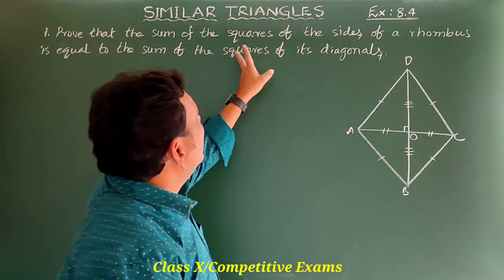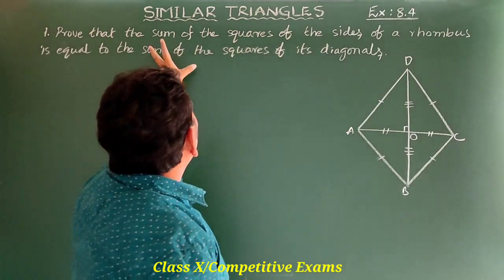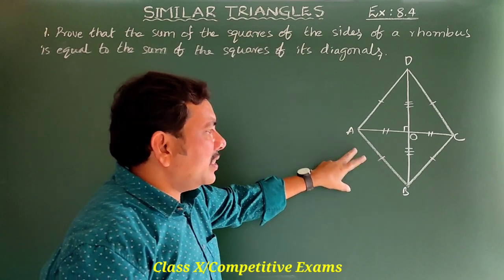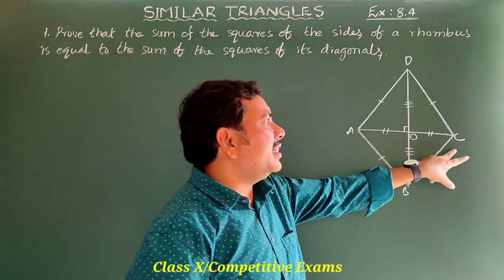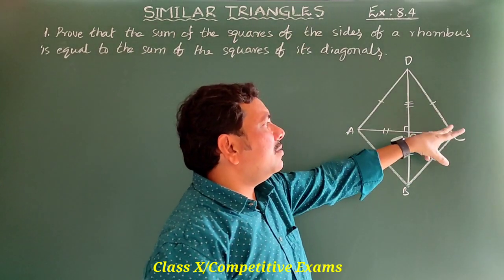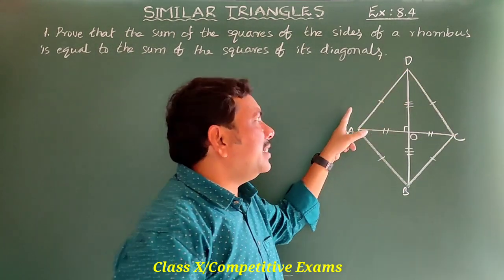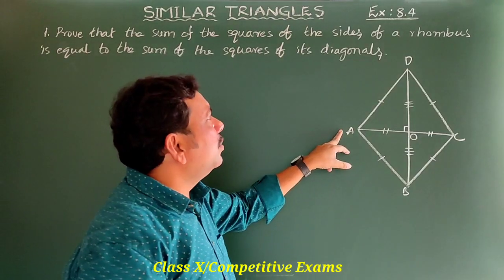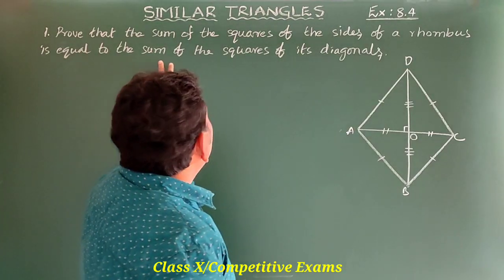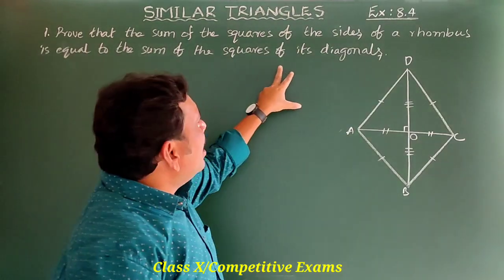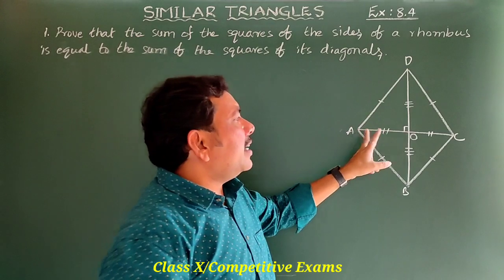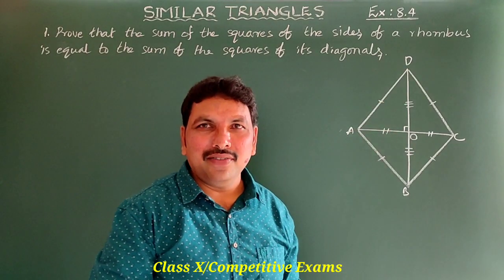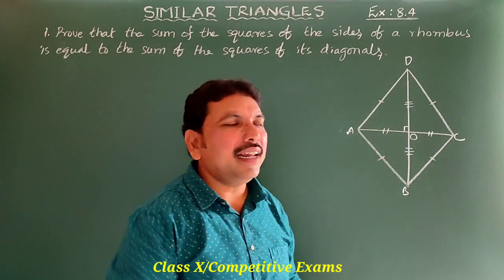What we have to prove? Prove that AB² + BC² + CD² + DA² = AC² + BD².